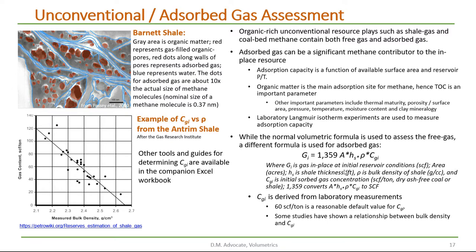Where G sub i is gas in place at initial reservoir conditions. A is the area of the play in acres, and H sub s is the shale thickness in feet. The Greek letter rho is the bulk density of the shale in grams per cc. And C sub g sub i, the initial sorbed gas concentration, is reported in standard cubic feet per ton, dry ash-free coal or shale. The 1,359 converts the area, thickness, density, and absorption capacity to standard cubic feet.